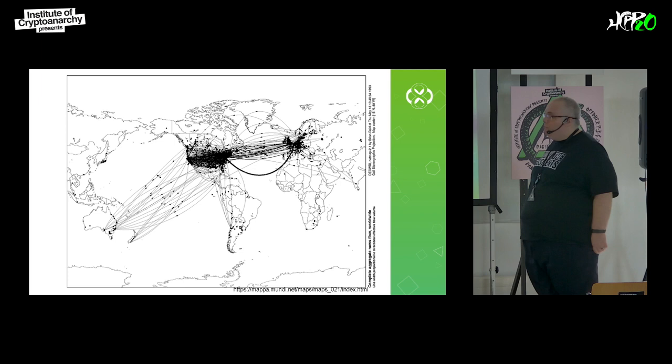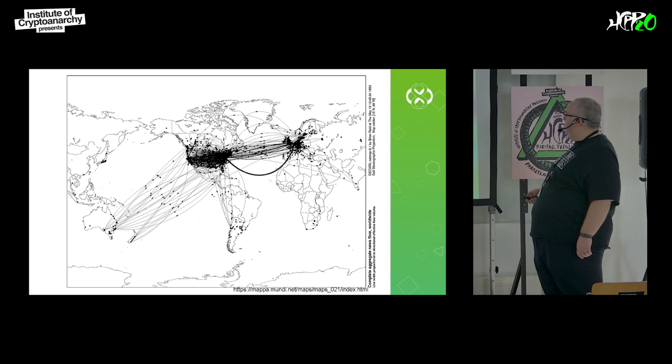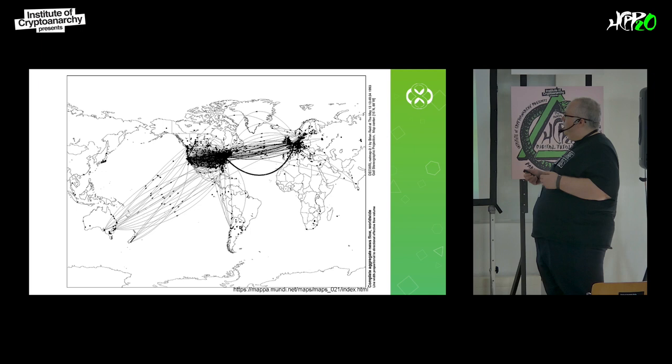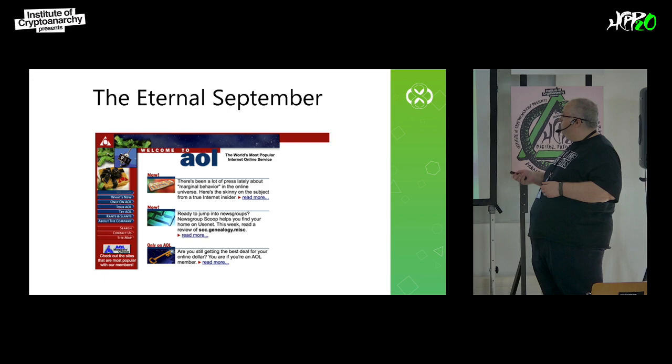This is Usenet in 1993. You can see mostly United States and Europe, but also Australia, South America, even a few in Africa and Japan. This really just took off in a major sort of way. By this point, of course, there was an internet, so it got much easier to access. But this was pretty much the heyday of the classical Usenet.